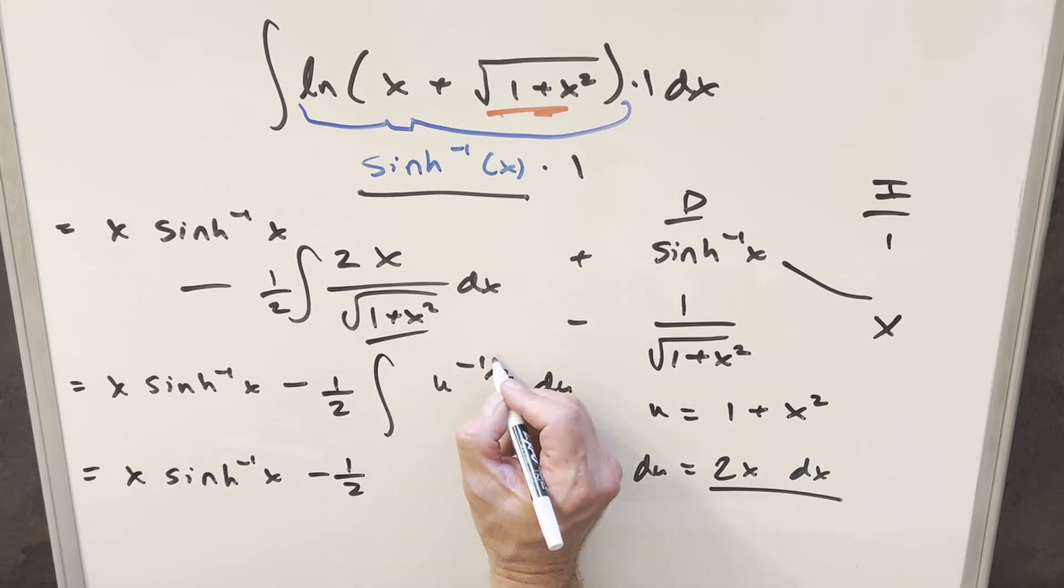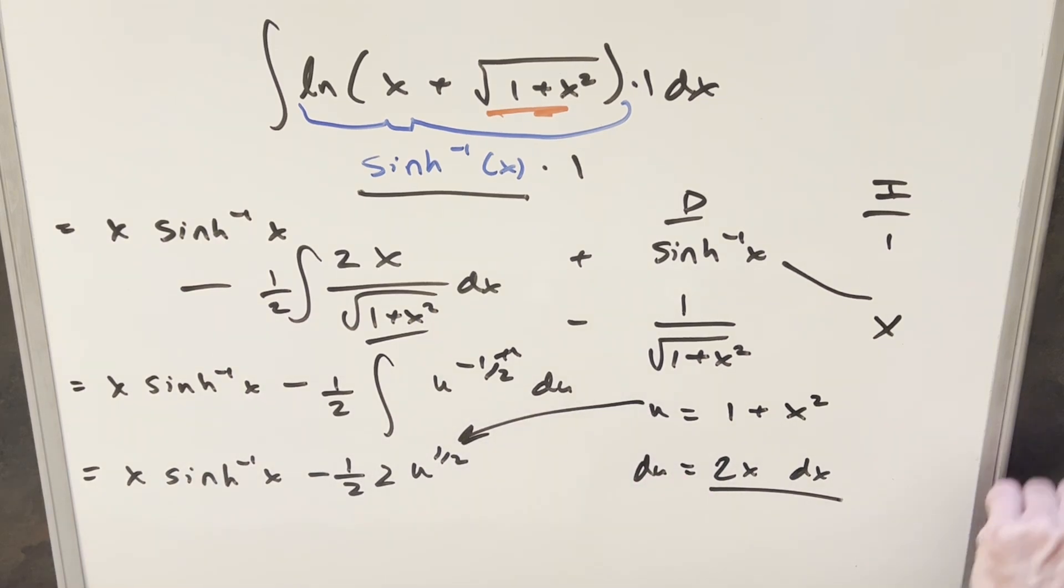So go ahead and integrate this. You're going to add a plus 1 here. You're going to end up with u one-half. Take the reciprocal. Bring a 2 out front. Back substitute in order to finish it off. Now when we do this 2 times a half, that's going to cancel.